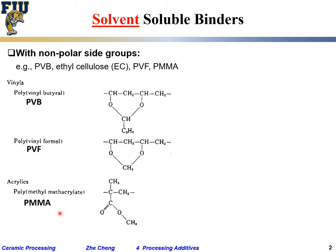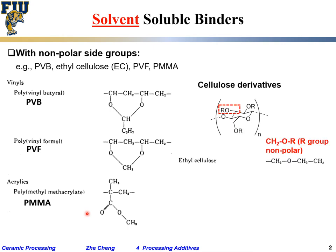Similarly, cellulose derivatives have a vinyl-oxygen backbone with an R group. For screen-printing binders, the R group is non-polar. This type of cellulose, like ethyl cellulose, can be added into terpineol solvent for screen printing.